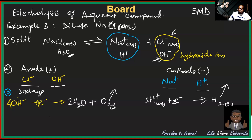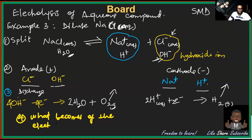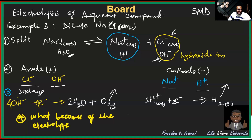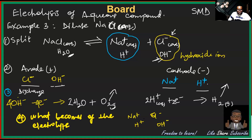We know we have four ions: sodium, chloride, hydrogen, and hydroxide. What was removed from the solution? Hydrogen ions were discharged at the cathode and hydroxide ions were discharged at the anode. So both hydrogen and hydroxide ions are removed from the solution.